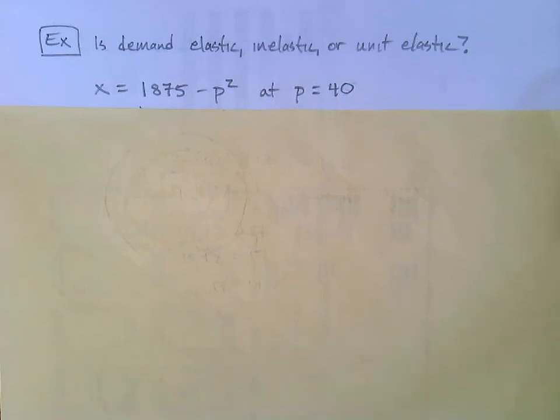Now thinking back to the elasticity of demand formula, what is f of p? f of p is our 1875 minus p squared. So typically it's called x, but you could think of that as a function of p. So let's find f prime of p. Not anything very demanding here. f prime of p equals negative 2p.